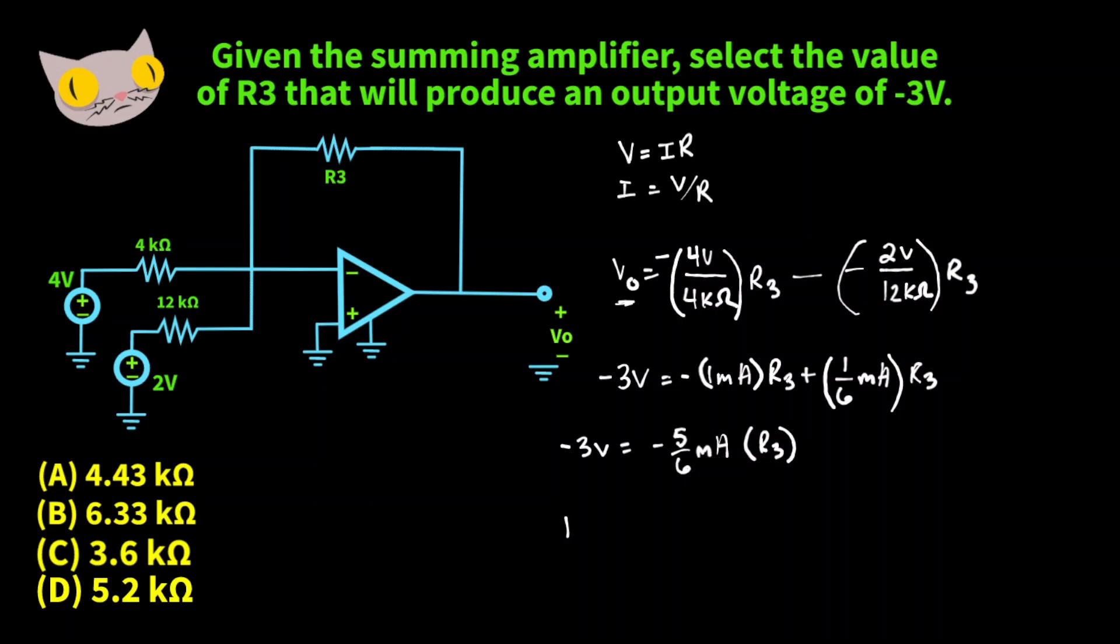And that's going to give us a value for R3 of about 3.6 thousand ohms. So C is our answer.